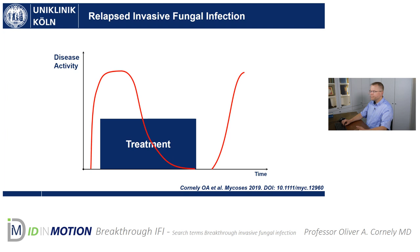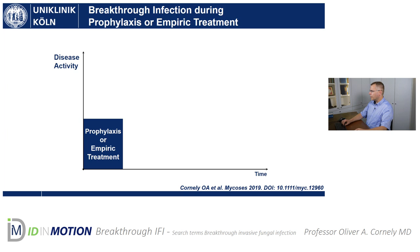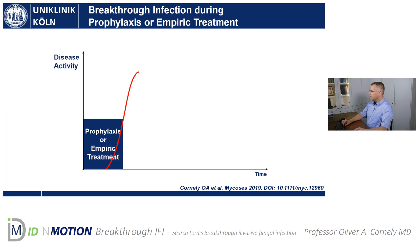Number four is breakthrough infection during prophylaxis or empiric treatment. If your patient is on prophylaxis or empiric treatment, there is antifungal exposure before you diagnose a fungal infection, because that is what you want to prevent. But if it doesn't work — another red line showing the activity of your invasive fungal infection — you would start treatment of that breakthrough invasive fungal infection, and hopefully that is successful.